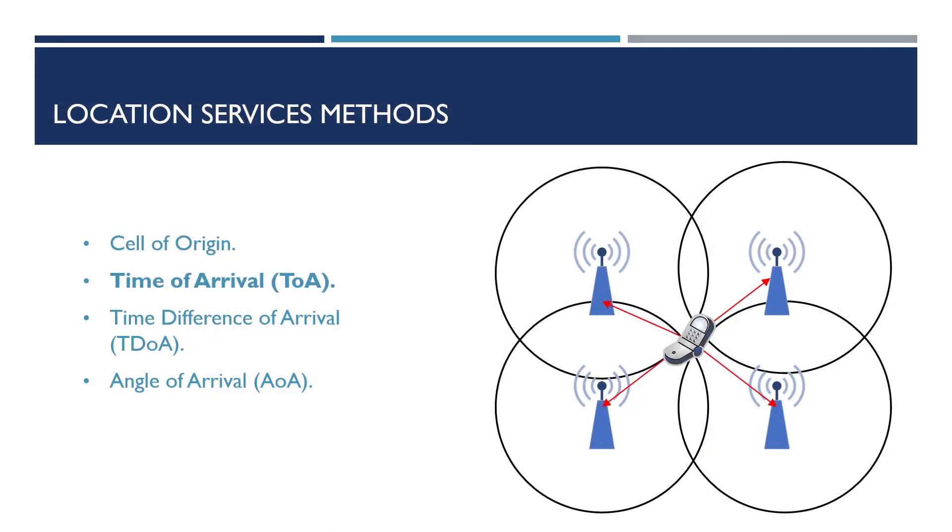Next up we have time of arrival or ToA for short. This method of location tracking requires at least three access points instead of the one required for cell of origin. Time of arrival uses the RSSI of the asset we're tracking to trilaterate X and Y coordinates. A downside of using time of arrival tracking is the need for precise time synchronization across all access points and the assets being tracked.